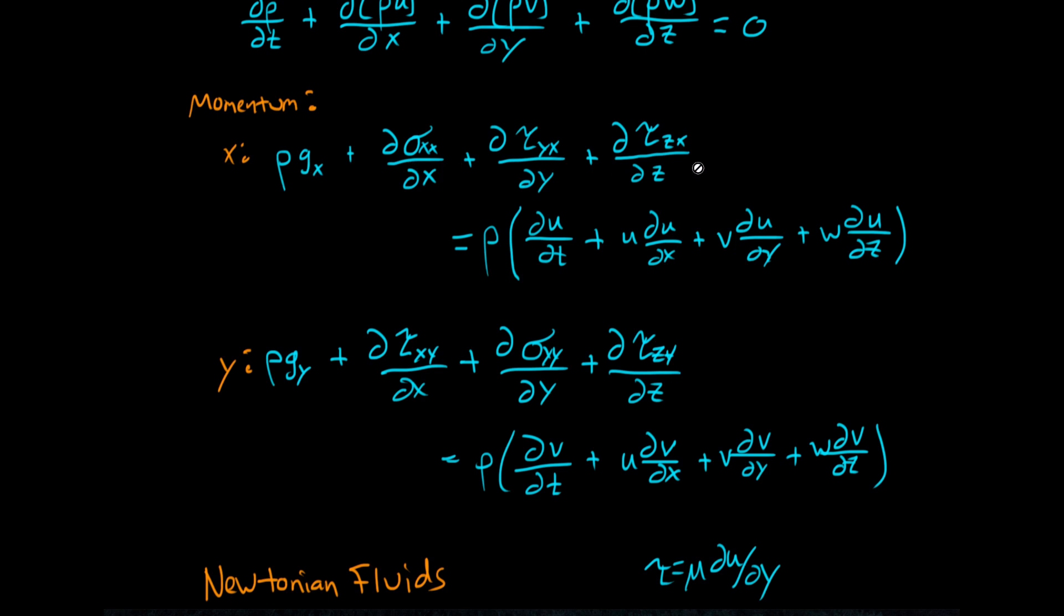On the left-hand side, we have all the different forces that can take place. This term here is called the body force. If gravity happened to point in the x direction, then this would be acceleration due to gravity, although it could be other things like electromagnetic forces or even molecular things.